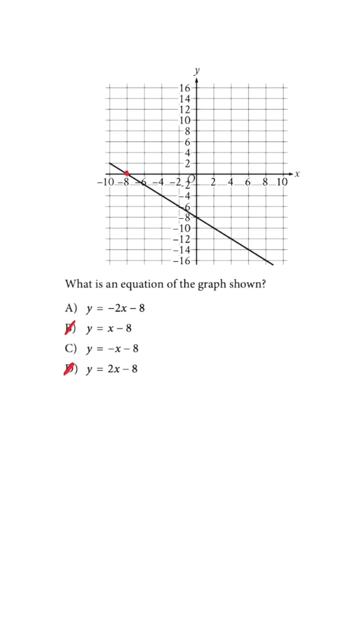And when we look at our intercepts, we notice that both of them are negative eight. So when you see something like this, you should automatically know that the slope is going to be one. So the answer choice is C.